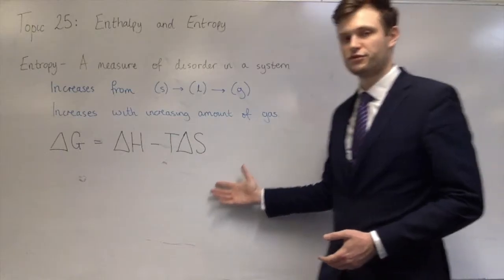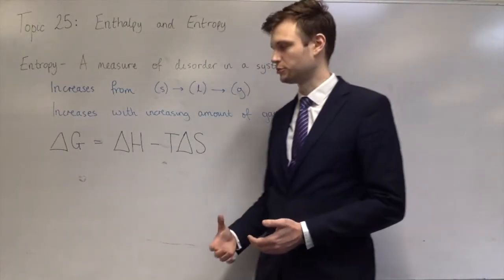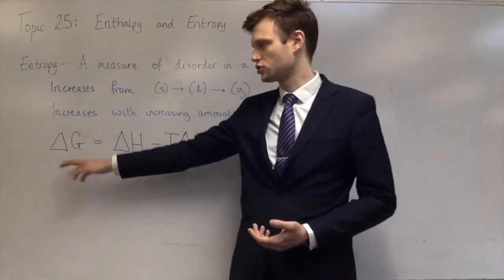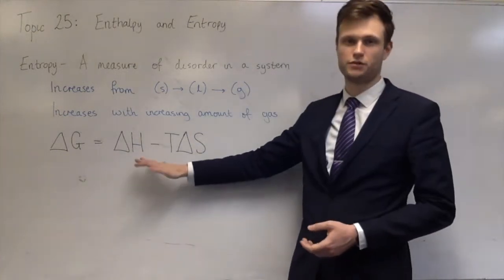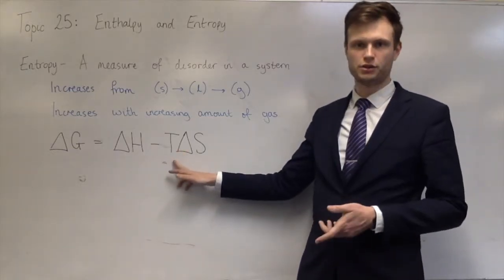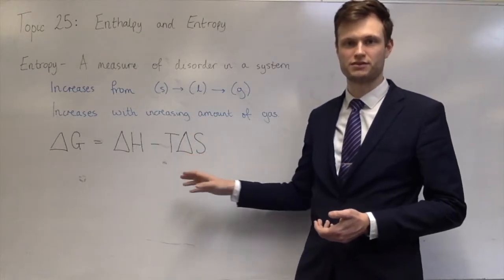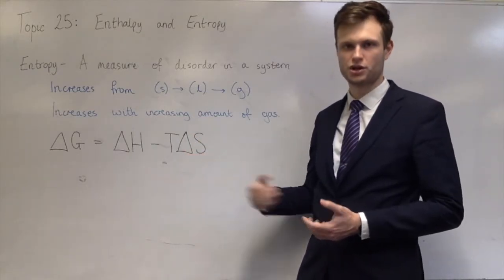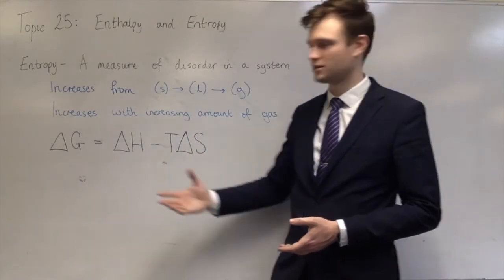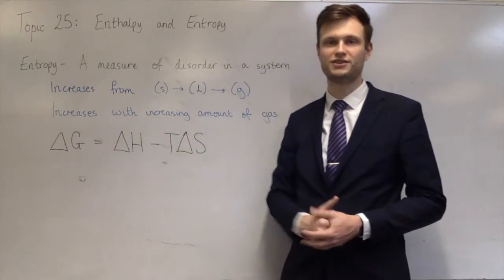This is the Gibbs free energy equation. This is what tells you whether or not a reaction is feasible. Delta G here is the Gibbs free energy, the change in Gibbs. Delta H is the change in enthalpy. T is the absolute temperature. And delta S is entropy. So this is the entropy change of a reaction. As I said, if delta G is less than zero, then this reaction is feasible.